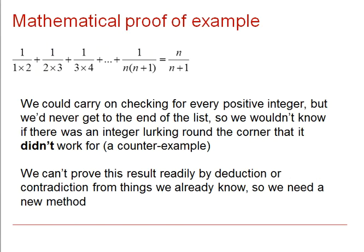Looking at our example, where we were trying to show that if we sum that particular pattern for n terms, we would end up the result n over n plus 1, we could go on checking for every positive integer, but we'd never get to the end of the list. We won't know if we'll ever find a countable example. Therefore, we can't use the previous methods of proof that we've talked about: exhaustion, deduction, or contradiction.